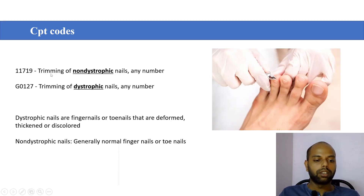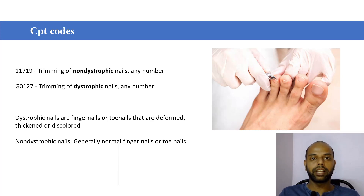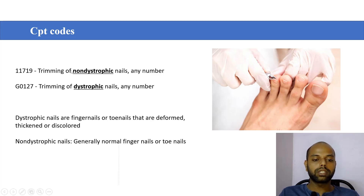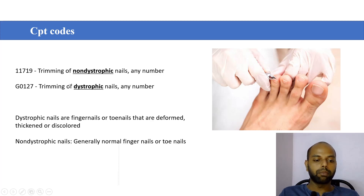For trimming of nails: 11719 is for trimming of non-dystrophic nails, and G0127 is for trimming of dystrophic nails. Dystrophic means deformed — thickened or discolored nails are called dystrophic nails. Non-dystrophic means there is no discoloration, no deformation, nor thickening — it's just normal finger or toe nails. When the provider trims non-dystrophic nails, any number, we have to code CPT 11719 with only one unit. When the provider trims dystrophic nails, any number, we have to code G0127 with only one unit.